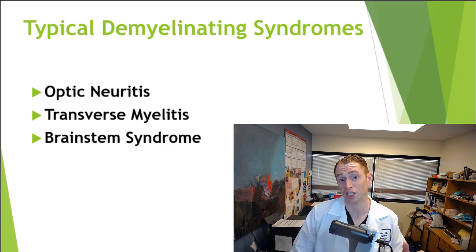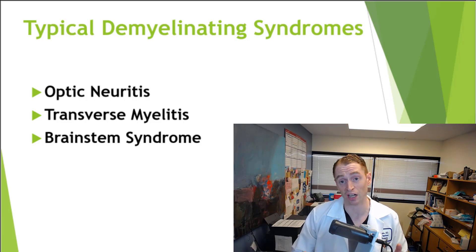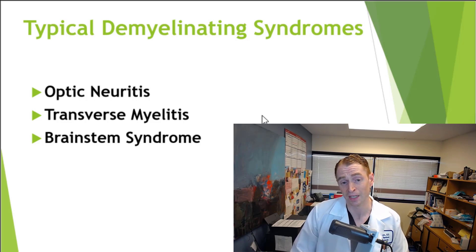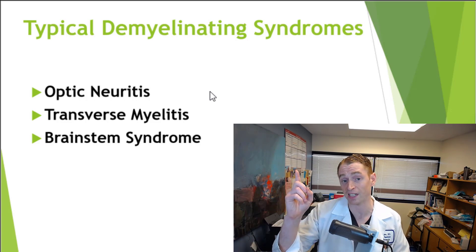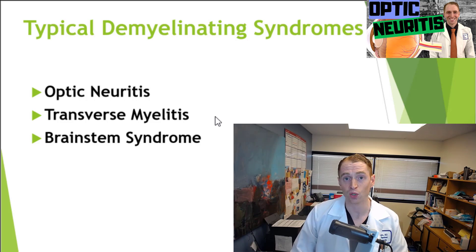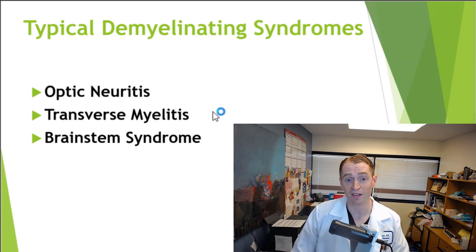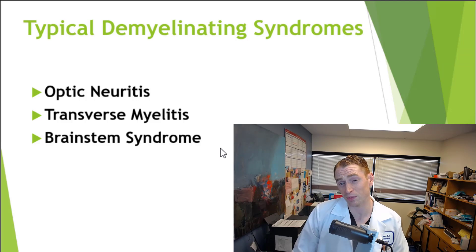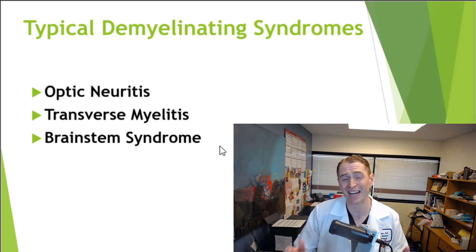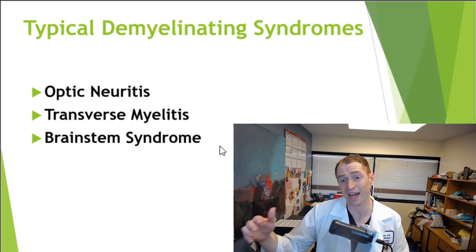The next concept is the idea of a typical demyelinating syndrome. People can have all sorts of neurological symptoms due to something else — vision loss from glaucoma or numbness from peripheral neuropathy — so we have to recognize what's typically seen in MS. Examples include optic neuritis, inflammation of the optic nerve, typically causing pain in one eye and vision loss with specific exam findings. Another example is transverse myelitis, inflammation of the spinal cord, causing numbness, weakness of the limbs, or bladder problems. Another is a brainstem syndrome, associated with clumsiness and double vision. Symptoms tend to be slow in onset, evolving over several days, then peak and may recover.